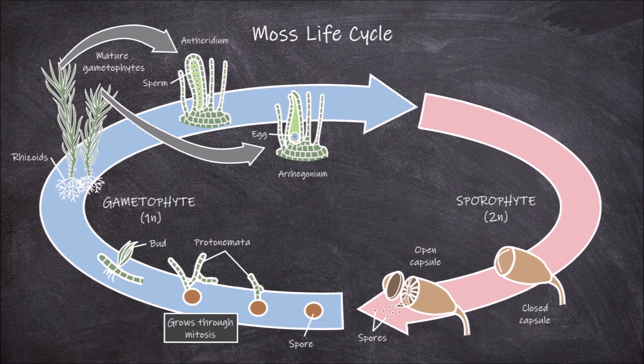The sperm, called antherozoids, are released when rain droplets wet the antheridia, where they swim to the eggs in the archegonia. The sporophyte generation starts with the fusion of a haploid egg and a haploid sperm, called fertilization. This occurs within the archegonium on the female gametophyte.